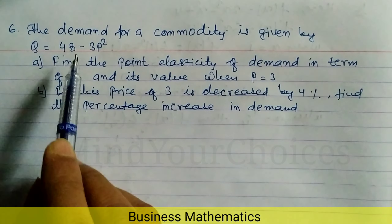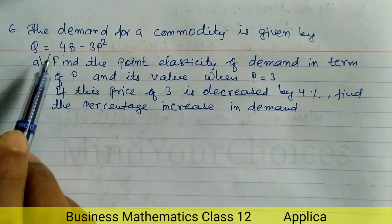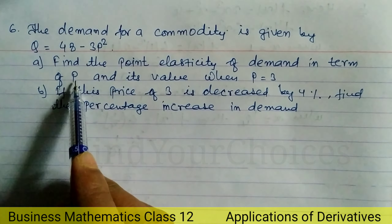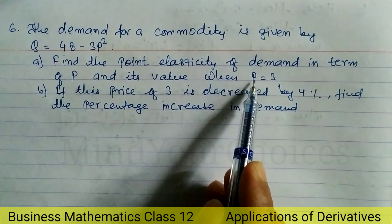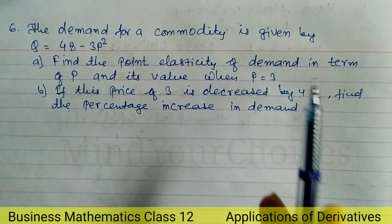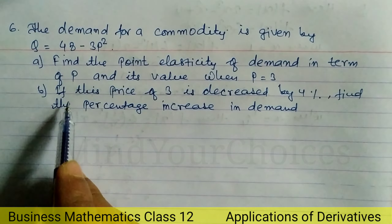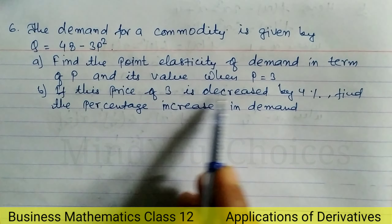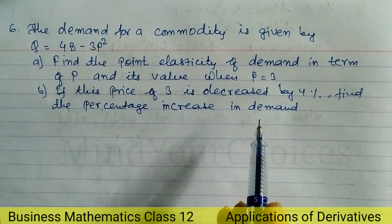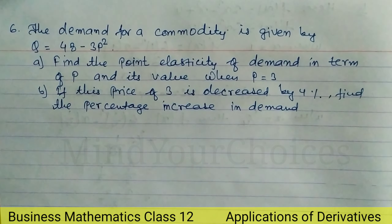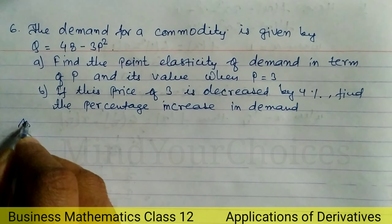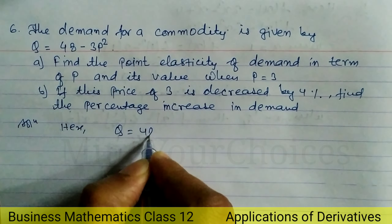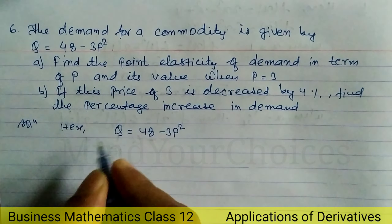Question number six. The demand for a commodity is given by the demand function Q = 48 - 3p². Part A: find the point elasticity of demand in terms of p, then when p = 3, find the point elasticity of demand when p = 3. After that, Part B: if the price of 3 is decreased by 4%, find the percentage change in demand. Let's take a start. Here the demand function Q = 48 - 3p².